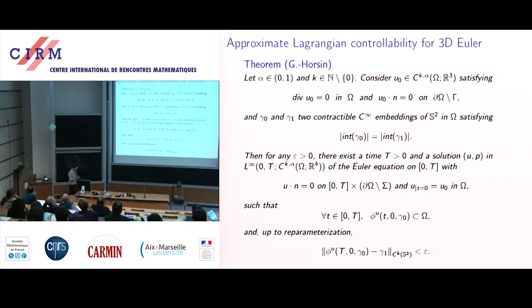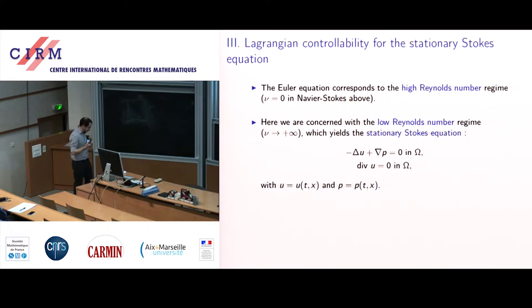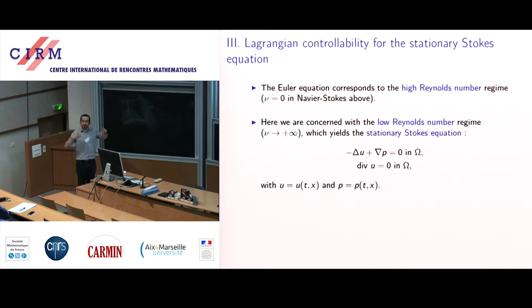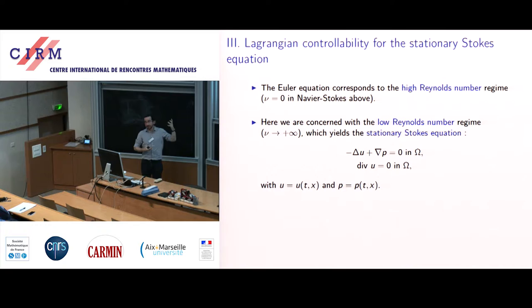Now let's go back to the problem I'm discussing today. I'm not considering the Euler equation or Navier-Stokes, but the Stokes equation — and not the evolutionary Stokes equation, but the stationary Stokes equation. This is a standard model for the so-called low Reynolds number regime, that is when the fluid is very viscous. In that case you let viscosity go to infinity and end up more or less with this system. Though the system is stationary, for all time you can define it and define a corresponding flow, and thus the problem of Lagrangian controllability as defined for Navier-Stokes.